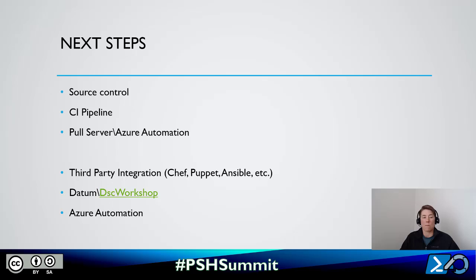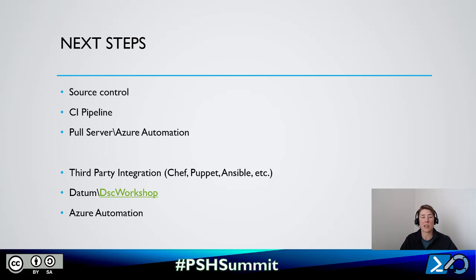For next steps, my first recommendation once you've got DSC up and running is to get it into source control. It's really valuable to commit changes with good commit messages showing the full history of your SQL server. You can then build into a CI pipeline to deploy changes automatically into your environments. You can also look at pull servers to deploy configurations and have your nodes pull them down.